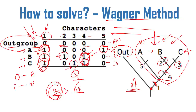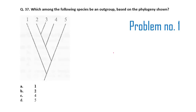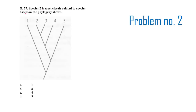Now let's move on to sample problems. First, a very easy problem: which among the following species can be an outgroup? The outgroup is the one separated at the beginning from the first branch point — in this case species one, which is totally separated while species two, three, four, and five all share a common ancestor. So species one is definitely the outgroup. Second question: species two is most closely related to which species? You should always check where exactly species are linked in their ancestry. Species two and three are linked by one common ancestor, so two is most closely related to three.